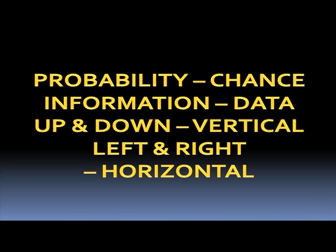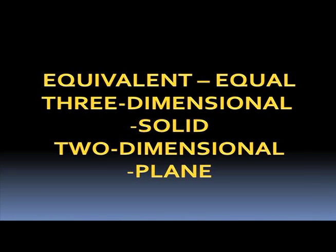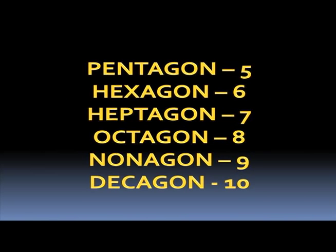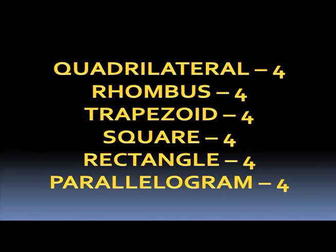Left to right: Horizontal. Equivalent: Equal. 3-dimensional: Solid. 2-dimensional: Plain. Closed figure with straight sides: It's a polygon. A pentagon has 5. Hexagon: 6. Heptagon: 7. Octagon: 8. Nonagon: 9. Decagon: 10. Quadrilateral: 4 sides — Rhombus, Trapezoid, Square, Rectangle.